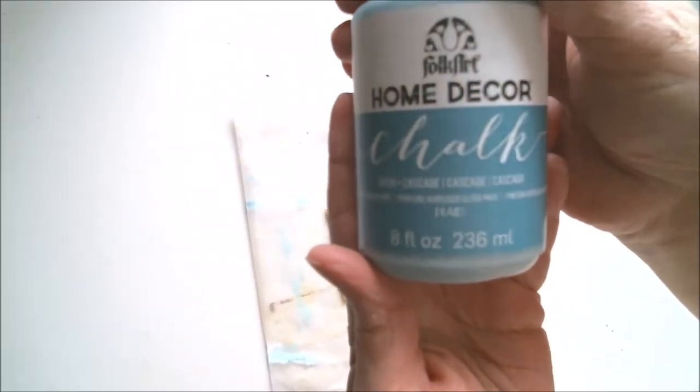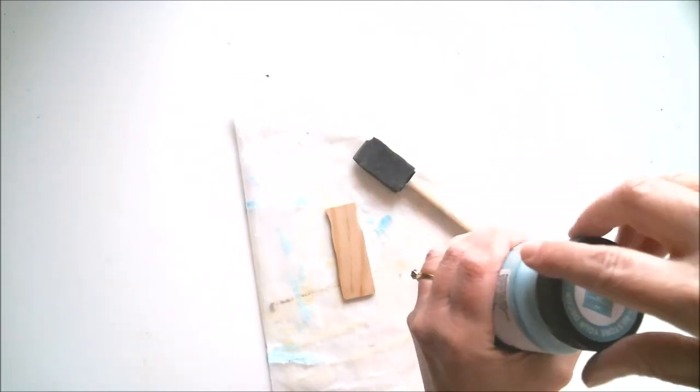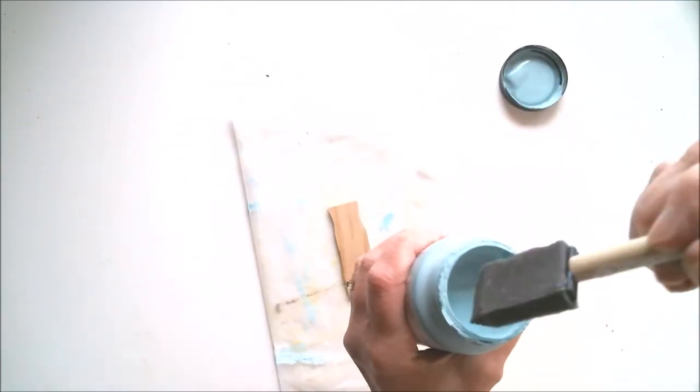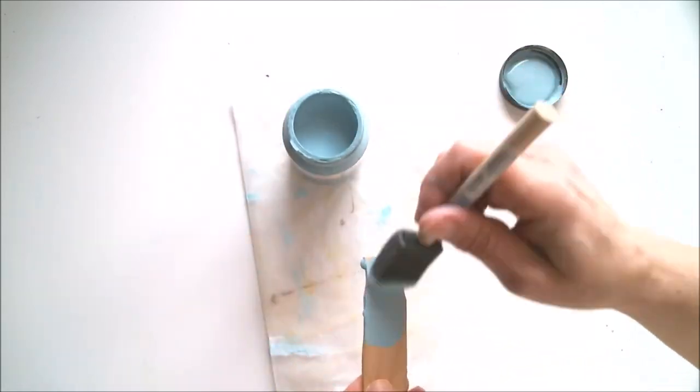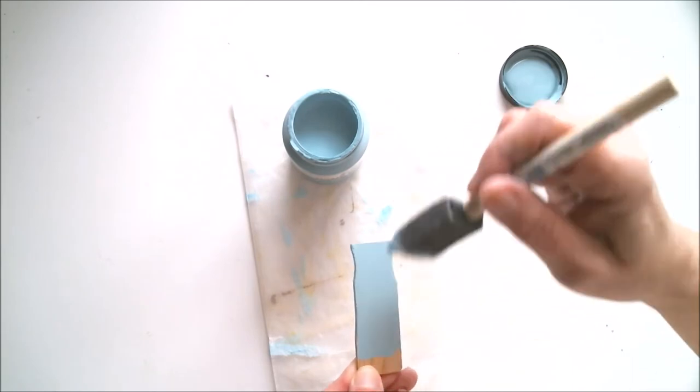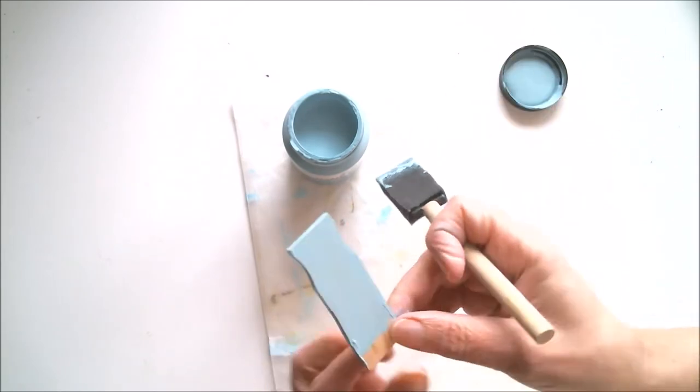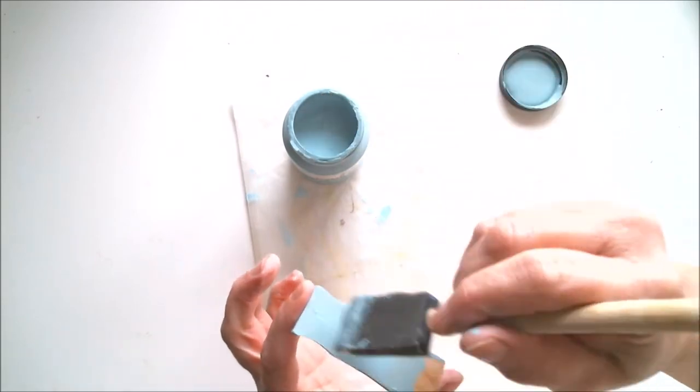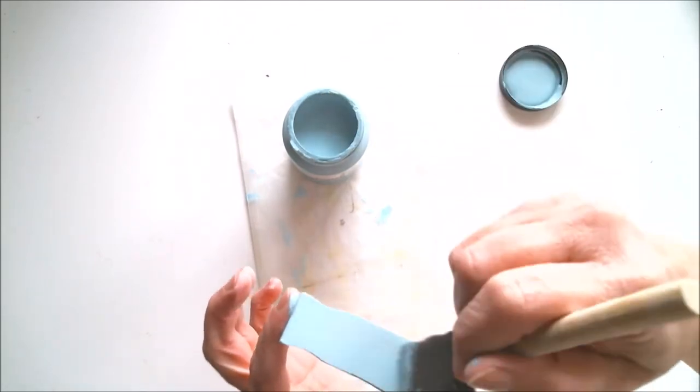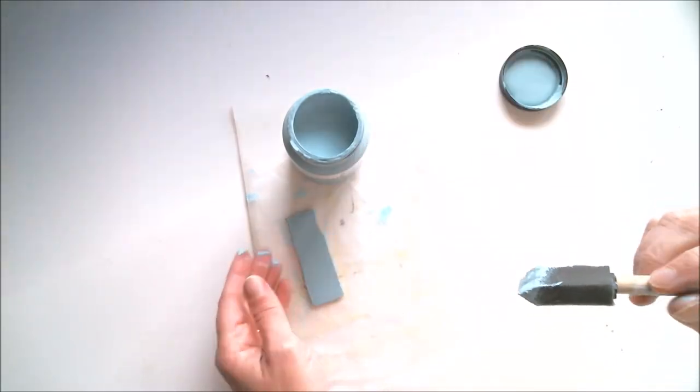For this first one, I'm going to be using my favorite crackle paint technique, because I love that weathered look, and I'm using chalk paint, but you can actually use any paint you want. My preference is to start off with the dark color as the base coat, and then once that dries, I'm going to be adding a layer of Elmer's glue and a layer of a lighter color chalk paint. Of course, you can always do the lighter on the bottom and the darker color on the top.